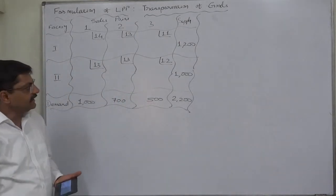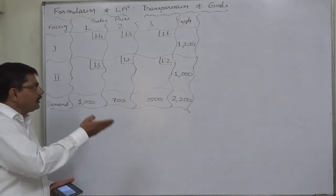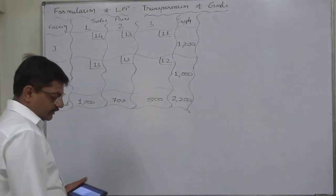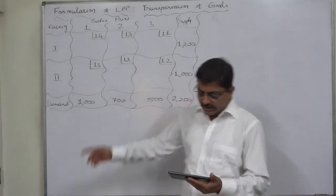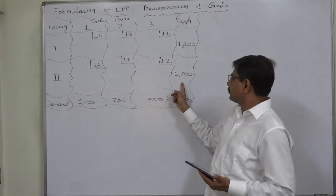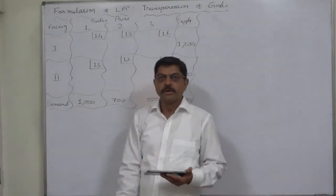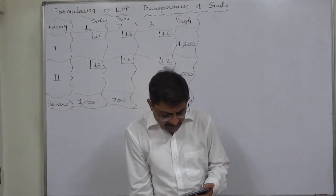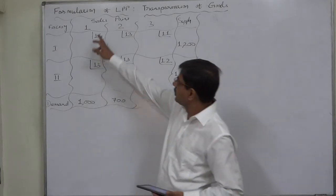In this lecture we are going to formulate the LPP only; in a later lecture we shall solve this problem through graphic method. Now, what is the problem? A company manufactures daily 1200 units at factory 1 and 1000 units at factory 2 — that means 1200 units of supply available from factory 1 and 1000 units of supply from factory 2.